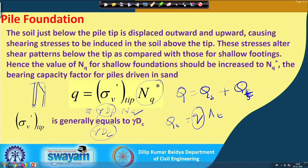The Nq value from shallow foundation theory is replaced by Nq* for deep foundations, to distinguish it from the shallow foundation Nq. So qt = σv' at tip × Nq*, where σv' at tip equals γ·dc, and Nq is replaced by Nq*.